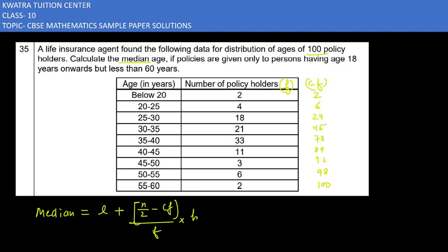It is L plus N by 2 minus CF over F into H. What is L? It is basically the lower limit of the median class. First we have to find the median class. How is the frequency in this case? We have 100 policyholders.